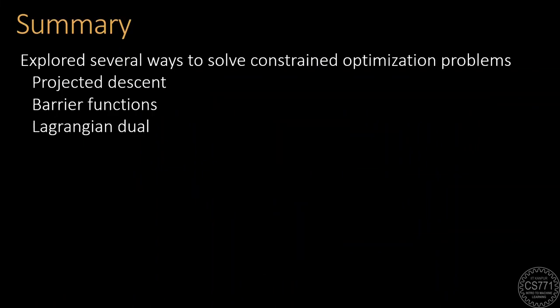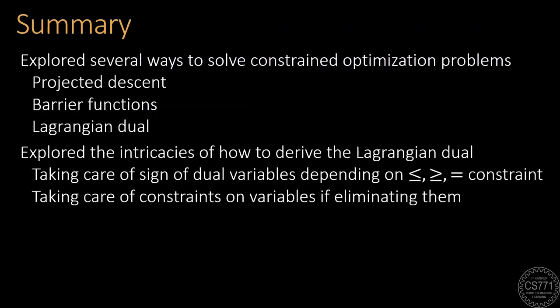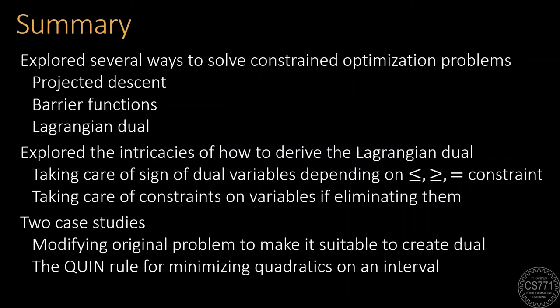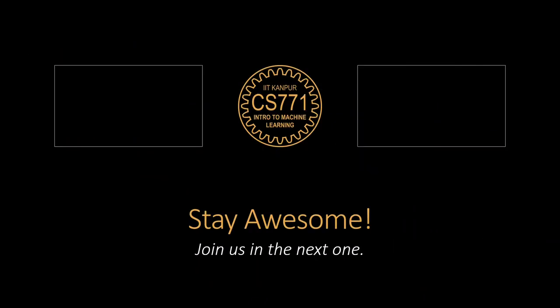We have explored several ways of solving constrained optimization problems, including projected descent methods, barrier methods, and the Lagrangian dual method. In today's discussion, we did an in-depth study of how to derive the Lagrangian dual of an optimization problem. We saw that we must be careful about the sign of dual variables depending on whether they correspond to less-than-or-equal-to, greater-than-or-equal-to, or equality constraints. When eliminating a variable, we must also eliminate any constraints dependent on that variable. We saw all these principles at work on two example case studies and learned the Quinn trick that comes in handy in several places.